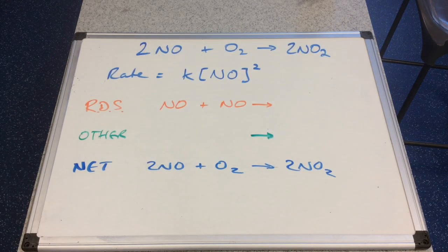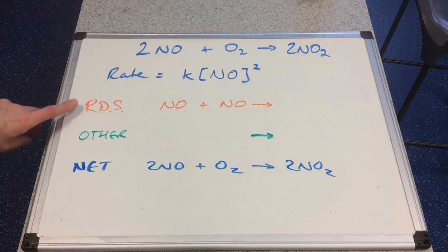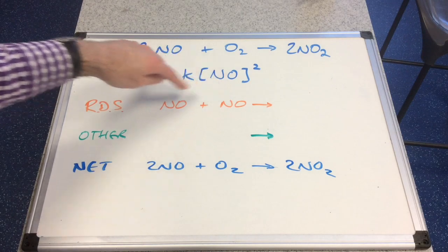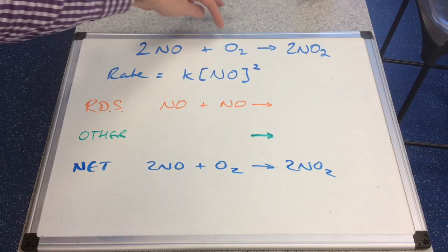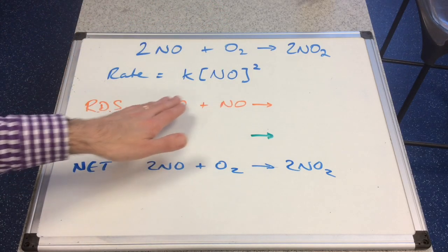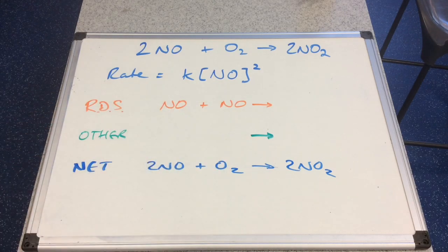Now let's look at another example: 2NO + O₂ → 2NO₂. The rate equation has been determined experimentally as: rate = k[NO]². It's second order with respect to NO, so we know the rate determining step can only involve two molecules of NO as reactants. There must be another step because O₂ is a reactant in the overall equation but not in the rate determining step — so it must feature in the green equation.